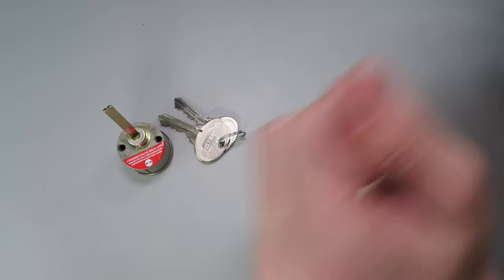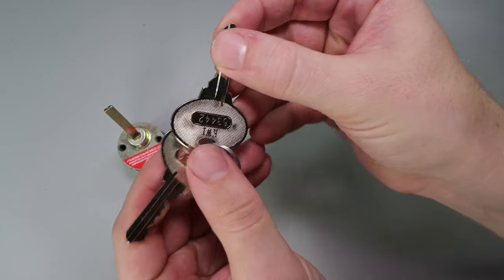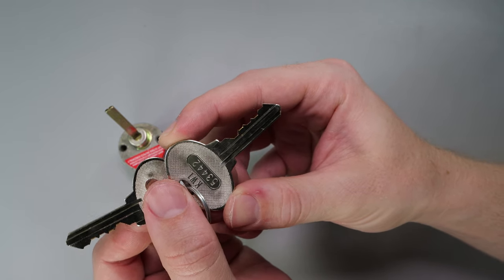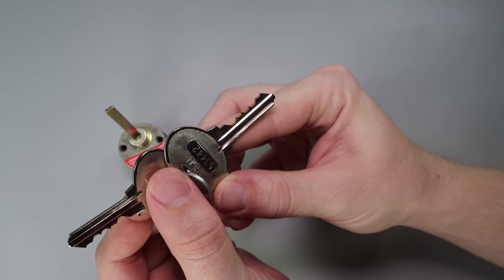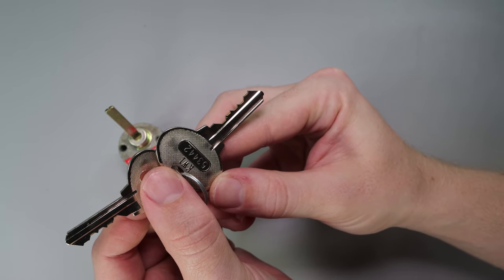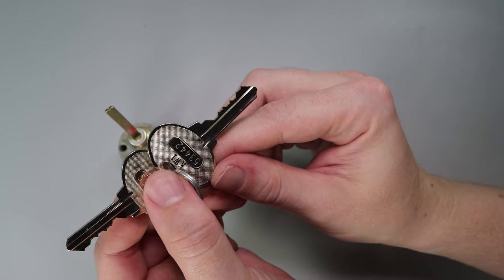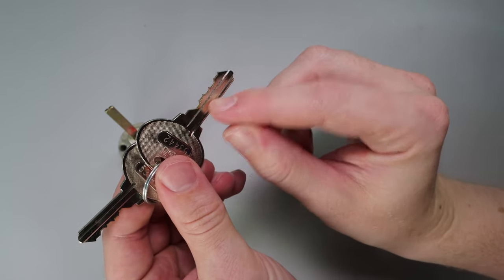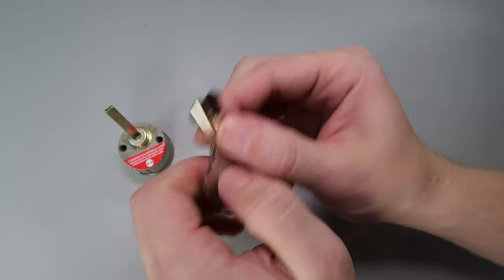So one thing I want to show you is on this key it does have the direct bitting stamped on it so that's good if you can make reference to it, but if you are going to have a key like this I would maybe get it duplicated and keep this key safe so you can keep that password to your lock safe and not in plain view. I do like that they did a deeper cut in the front, that's a nice little touch.